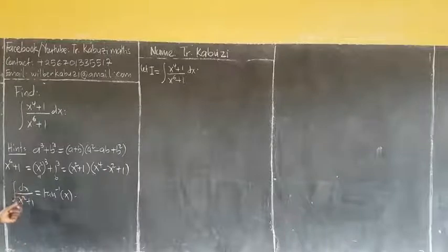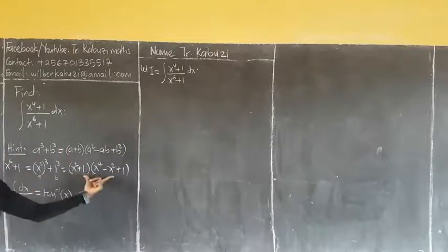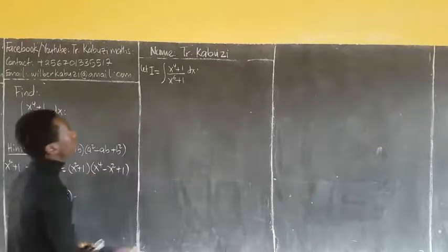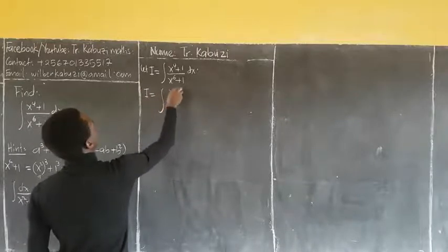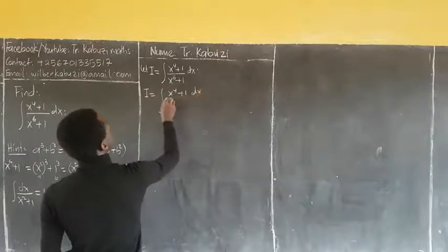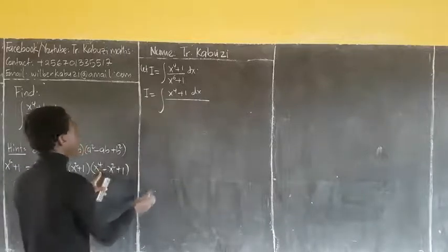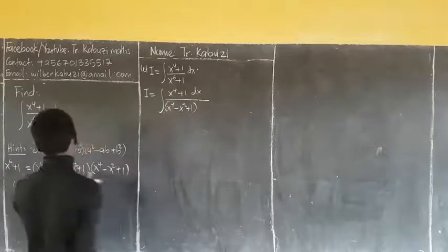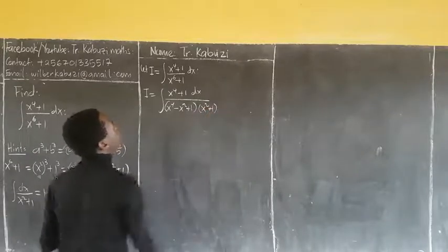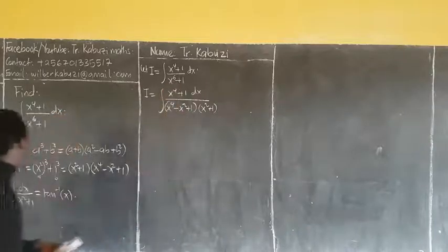We also have that when we multiply (x² + 1), you get the other factor. So allow me, when I use this substitution, I can expand the denominator. Now my integral I is going to be the integral of (x⁴ + 1) over (x⁴ − x² + 1)(x² + 1).